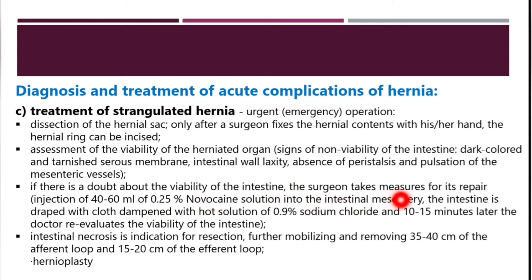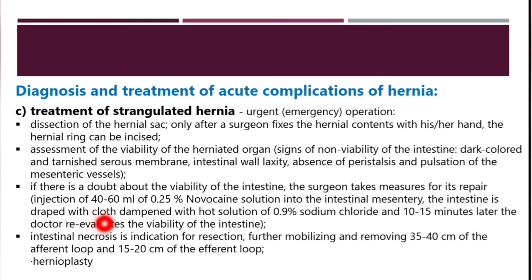If there is doubt about intestinal viability, the surgeon takes repair measures: injection of 40 to 60 ml of 0.25% novocaine solution into the intestinal mesentery, and wrapping the intestine with cloth dampened with hot 0.9% sodium chloride solution. After 10 to 15 minutes, the doctor re-evaluates viability. If necrosis is present, resection is performed: mobilization removing 35 to 40 centimeters of the upper afferent loop and 15 to 20 centimeters of the efferent loop, followed by hernioplasty.